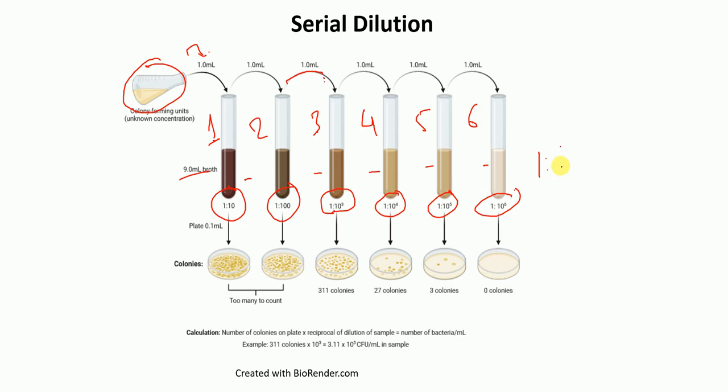After this, from each of these tubes, we take 0.1 ml and we plate each separately. We then let the bacteria grow in the incubation chamber. As you can see that in the first two dilutions, it is hard to count the number of cells because there are too many colonies.